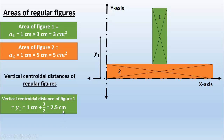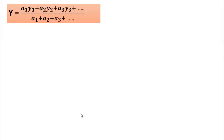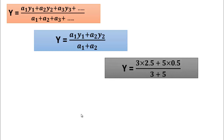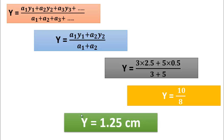y2 is the vertical centroidal distance of figure 2, determined by dividing the height of figure 2 by 2. The height of figure 2 is 1 cm, so y2 = 1/2 = 0.5 cm. Applying the formula: ȳ = (A1·y1 + A2·y2) / (A1 + A2) = (3 × 2.5 + 5 × 0.5) / (3 + 5). After calculation: ȳ = (7.5 + 2.5) / 8 = 10 / 8 = 1.25 centimeters.